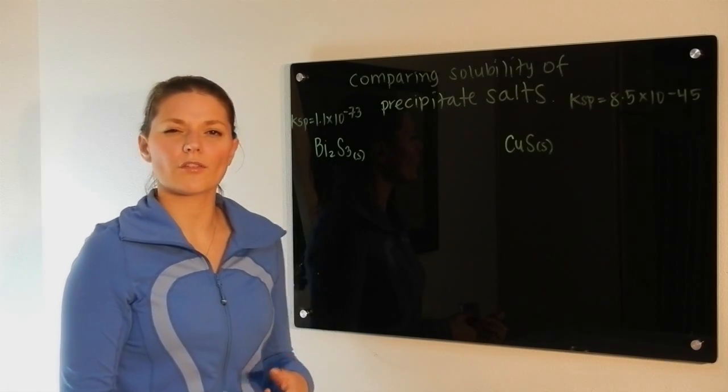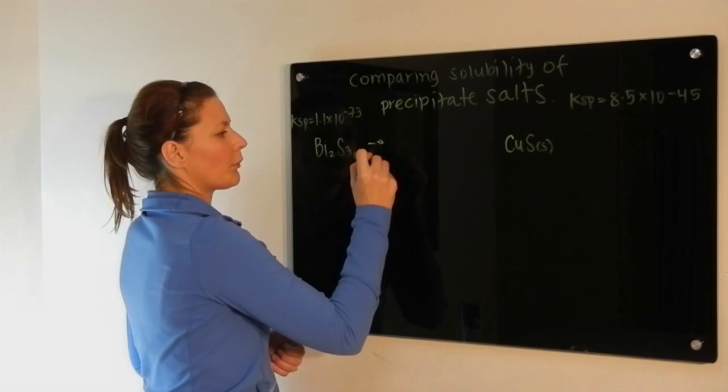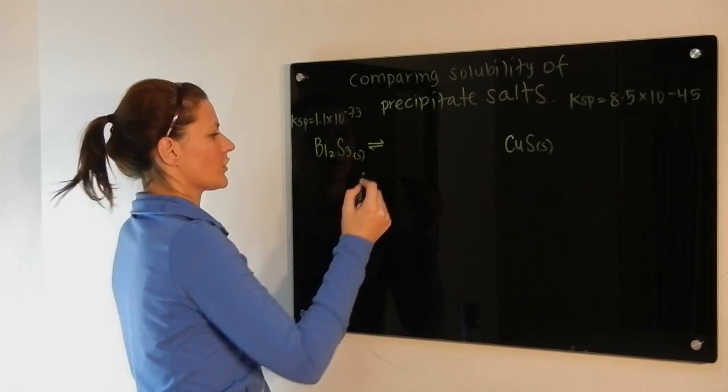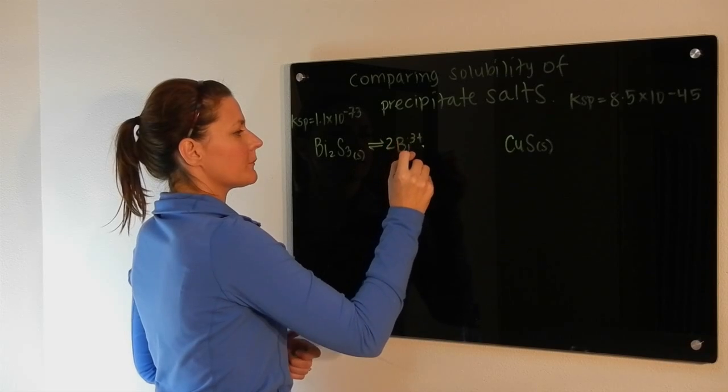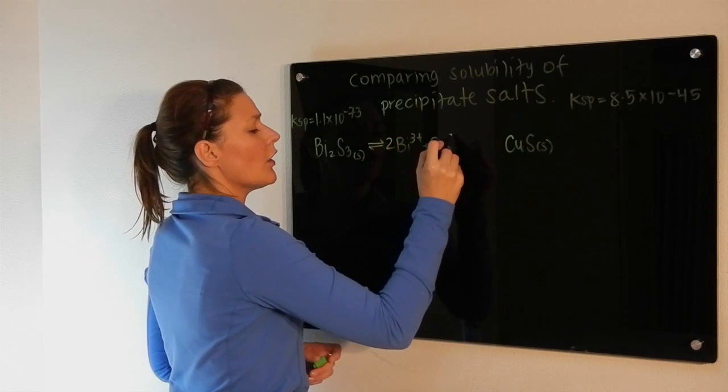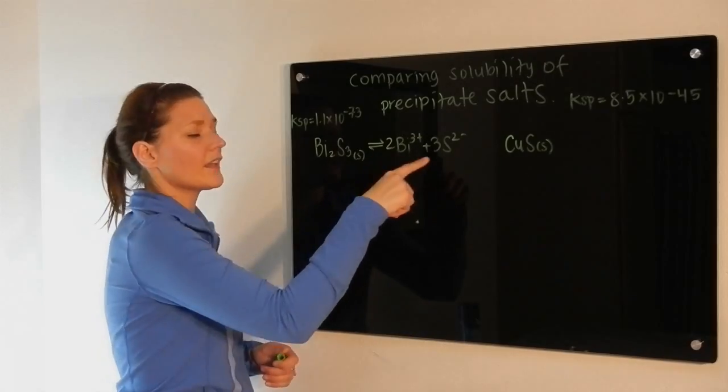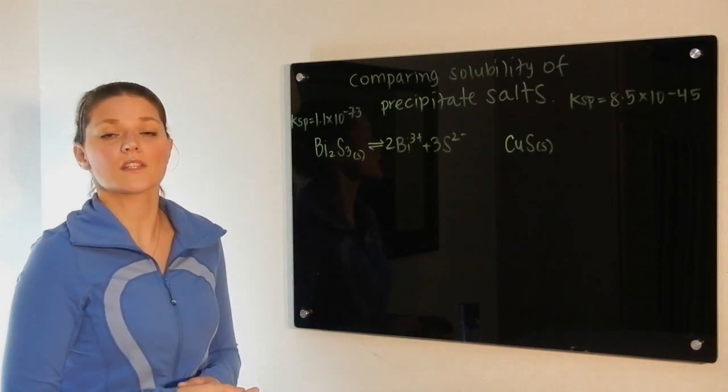What we need to do however is take a look at the actual breakdown of this when it is dissolved in solution. So this would break into two bismuth ions and three sulfide ions, giving us a total of five ions overall.